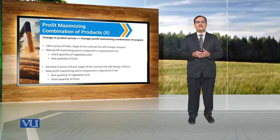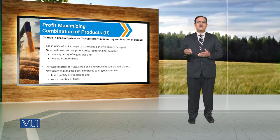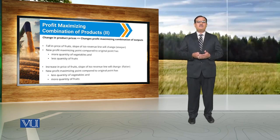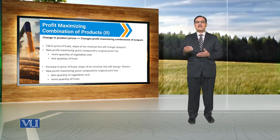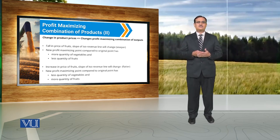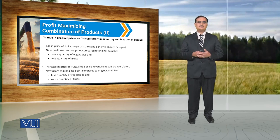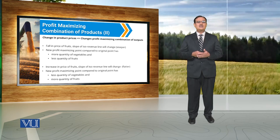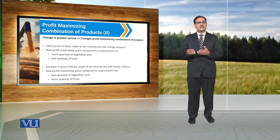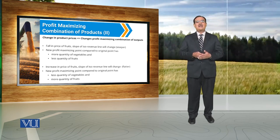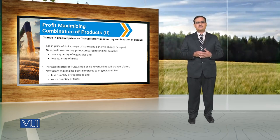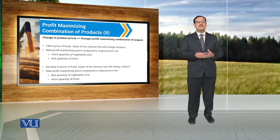When the price of vegetables remains constant and there is a fall in the price of fruits, the slope of the ISO revenue curve becomes steeper. With a new profit-maximizing combination, the farmer will produce more quantity of vegetables and less quantity of fruits.